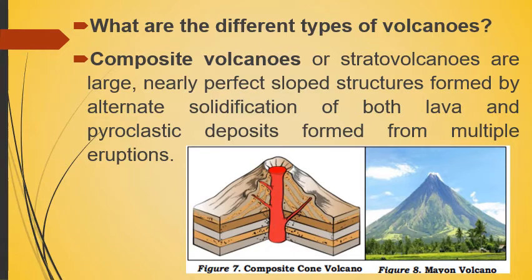Composite volcanoes, or stratovolcanoes, are large, nearly perfect slope structures formed by the alternate solidification of both lava and pyroclastic deposits, formed from multiple eruptions.